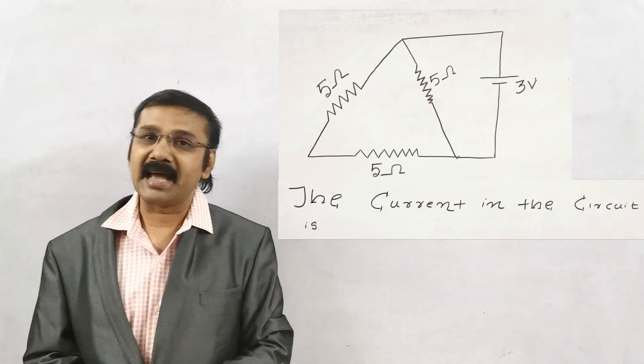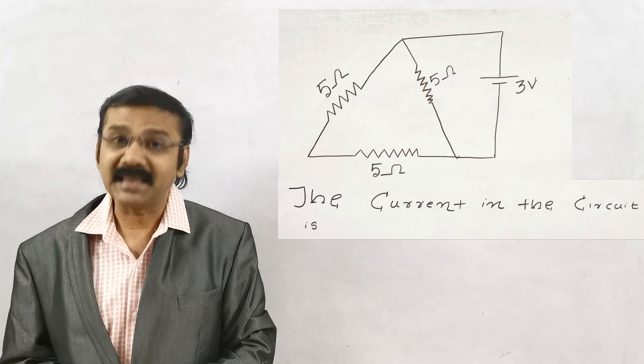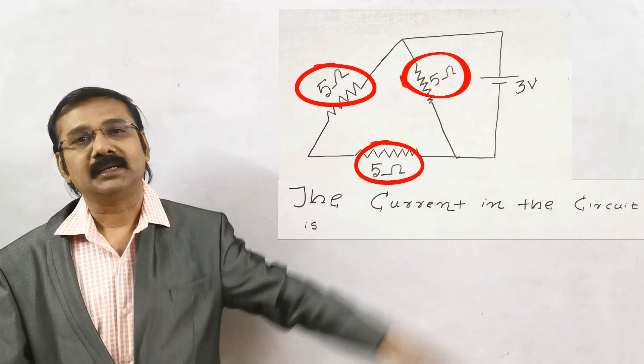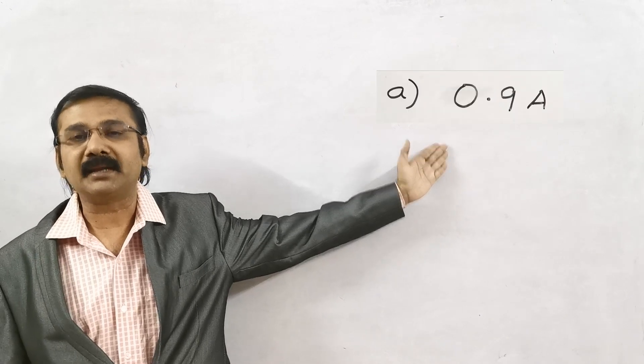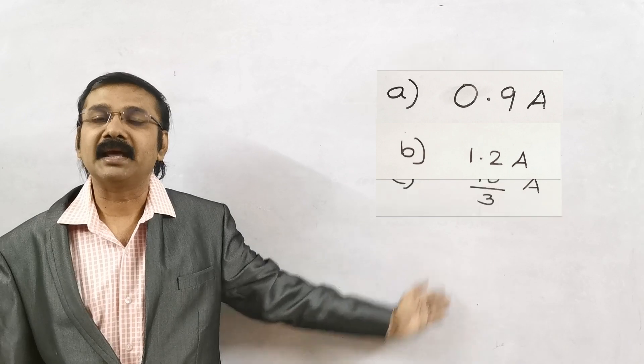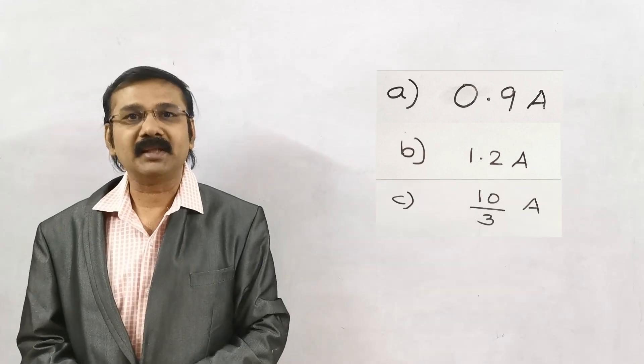It has been given in the shape of a triangle having 5 ohms resistance each. The options were given as A, 0.9 ampere; B, 1.2 ampere; C, 10 by 3 ampere; and finally D, 5 ampere.